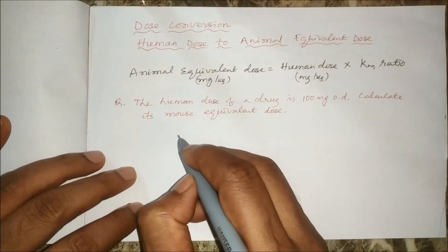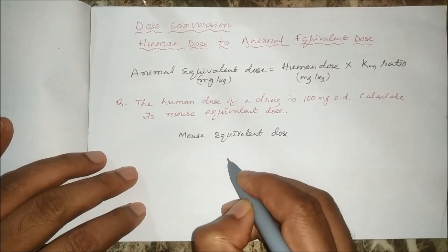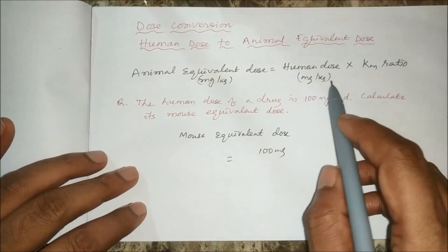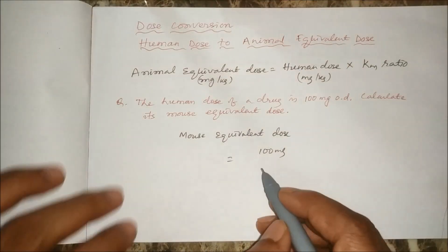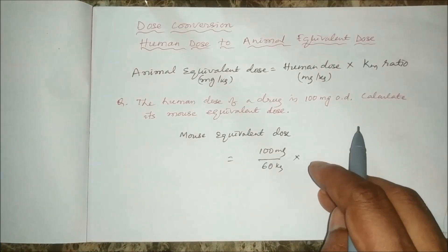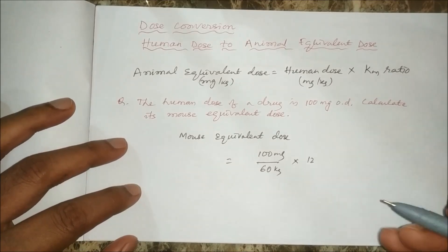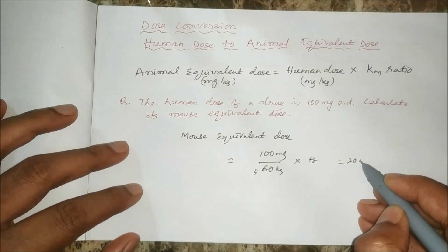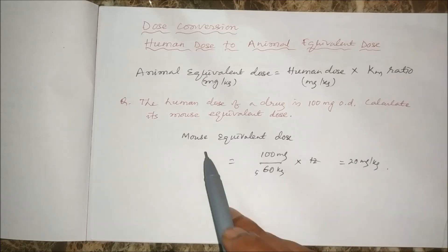Let us take one example. The human dose of a drug is 100 mg once daily, and we want to calculate the mouse equivalent dose. Mouse equivalent dose in mg/kg equals human dose in mg/kg multiplied by KM ratio. Human dose in mg/kg is 100 mg divided by 60 kg (average human weight), multiplied by the KM ratio for mouse, which is 12.3. This gives approximately 20 mg/kg. So if we want to do the experiment in mouse, we have to use a dose of 20 mg/kg.